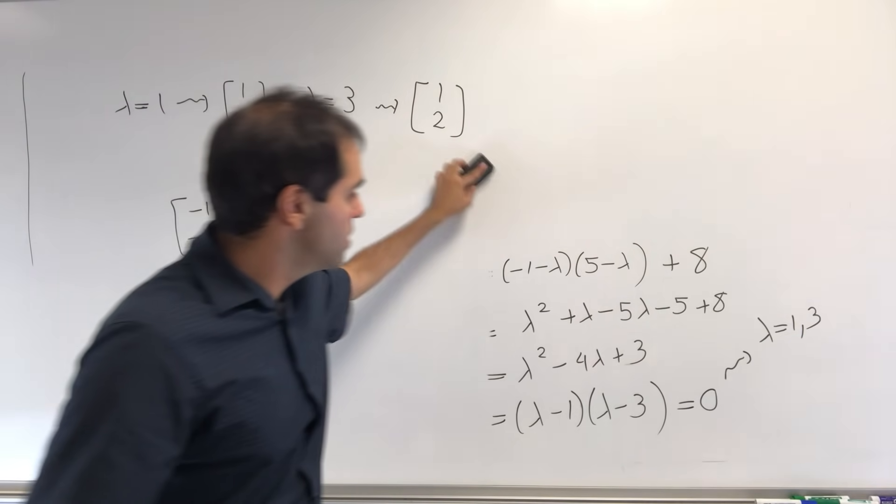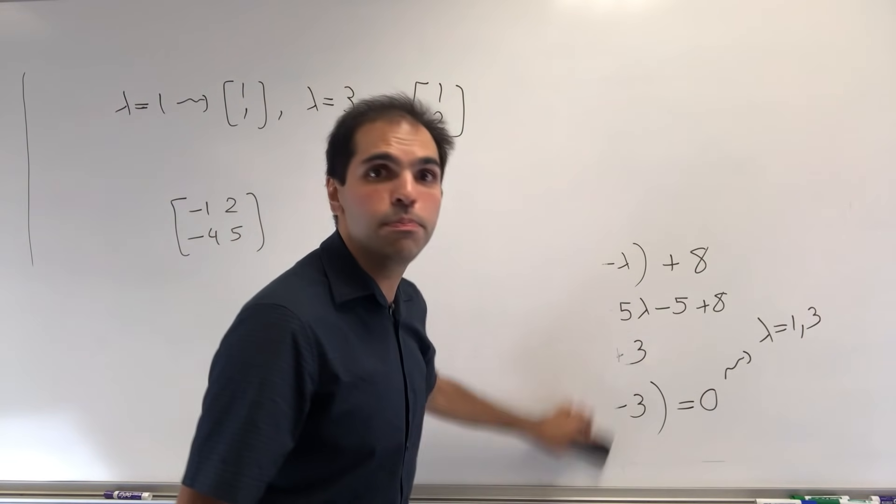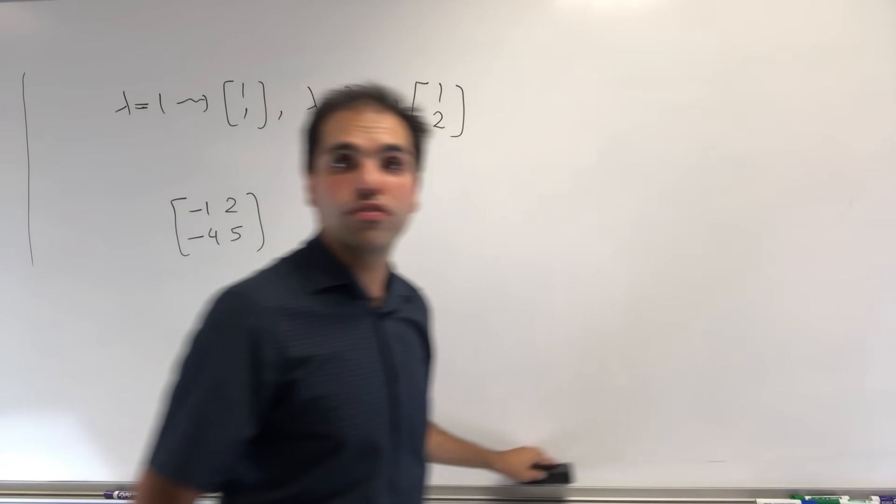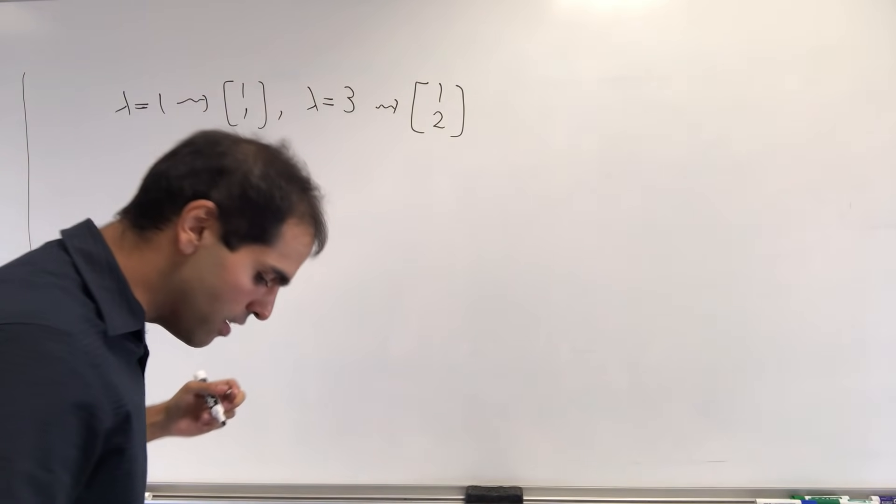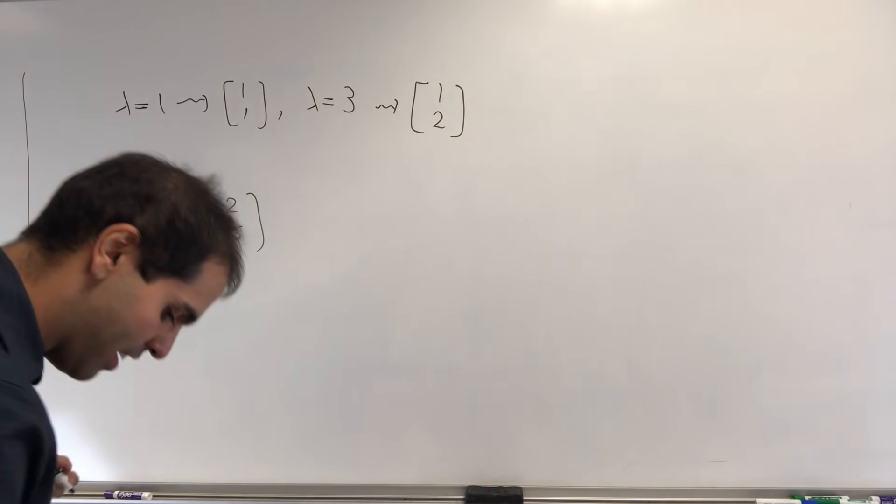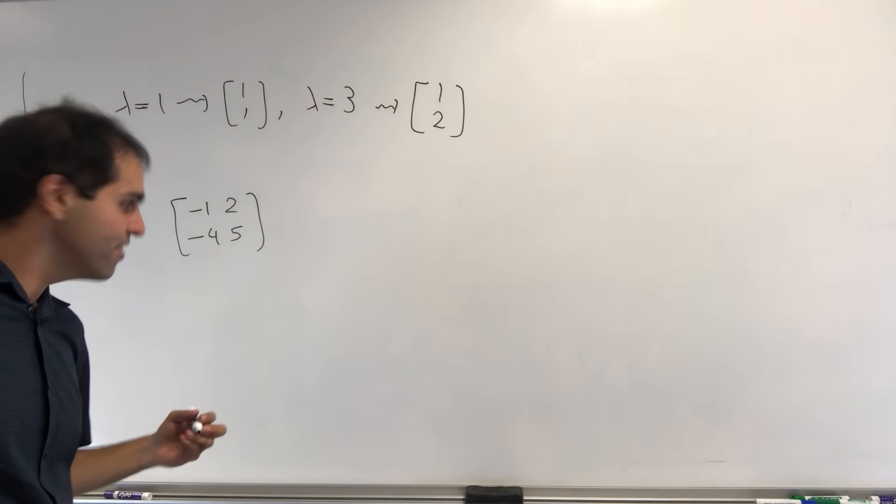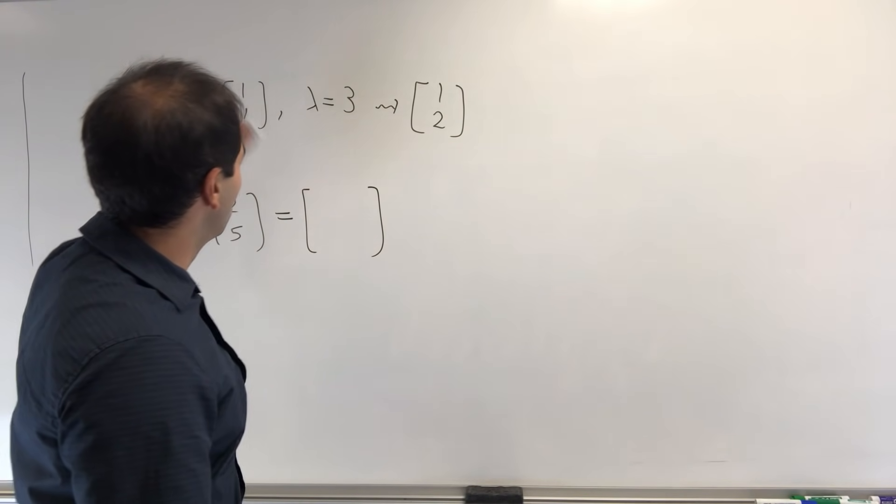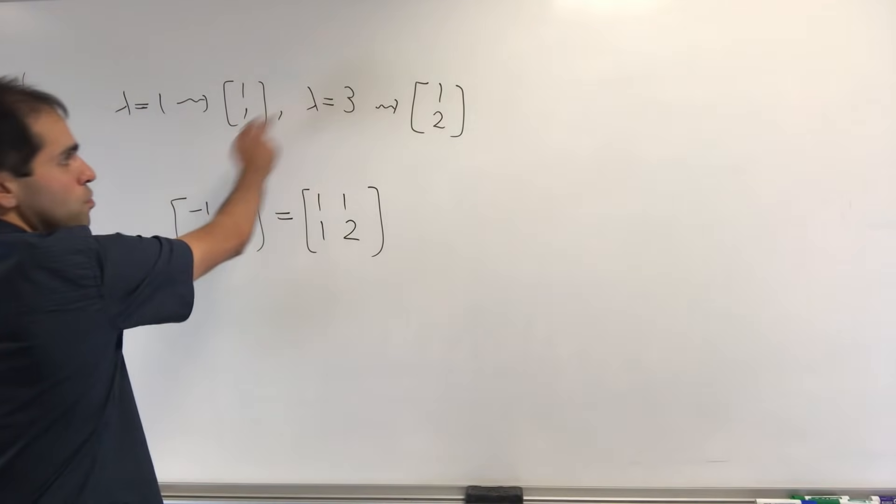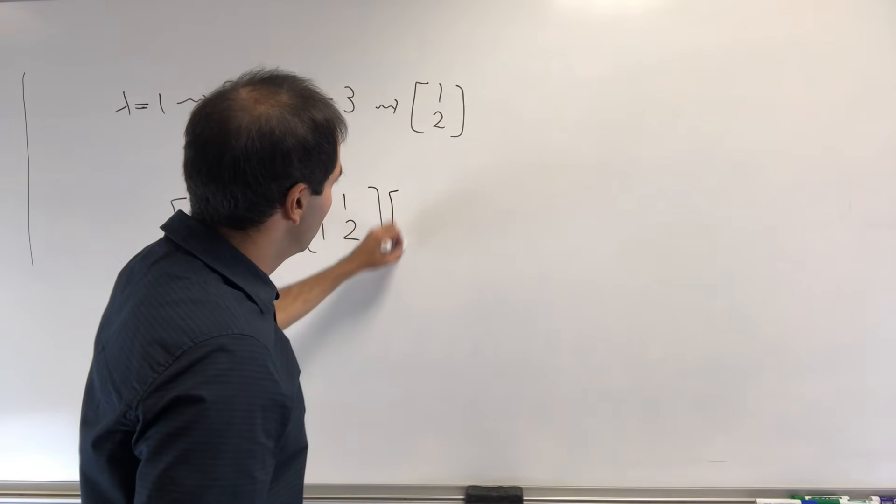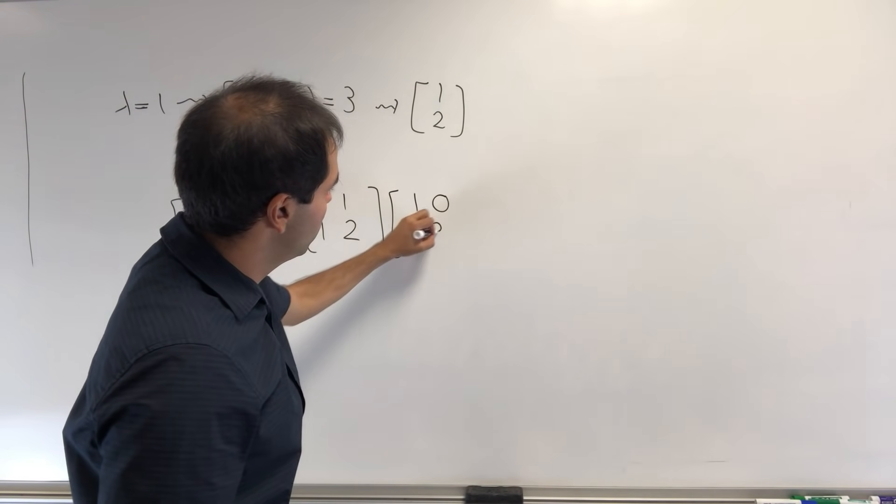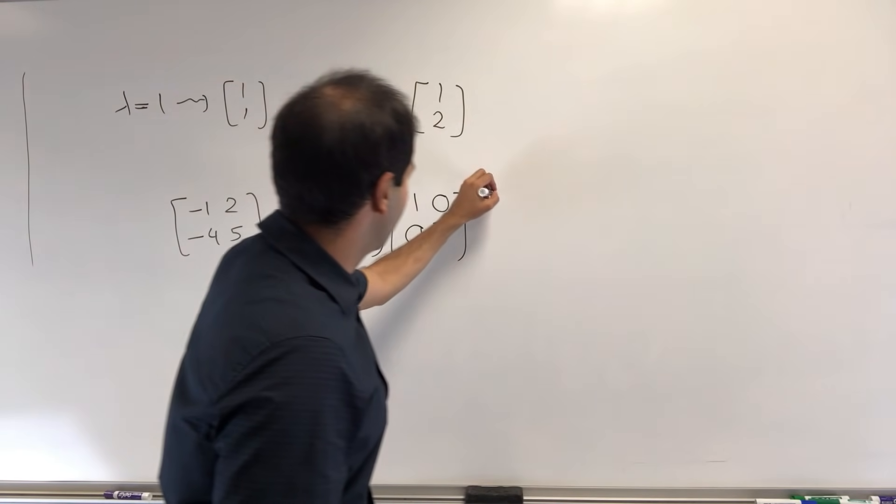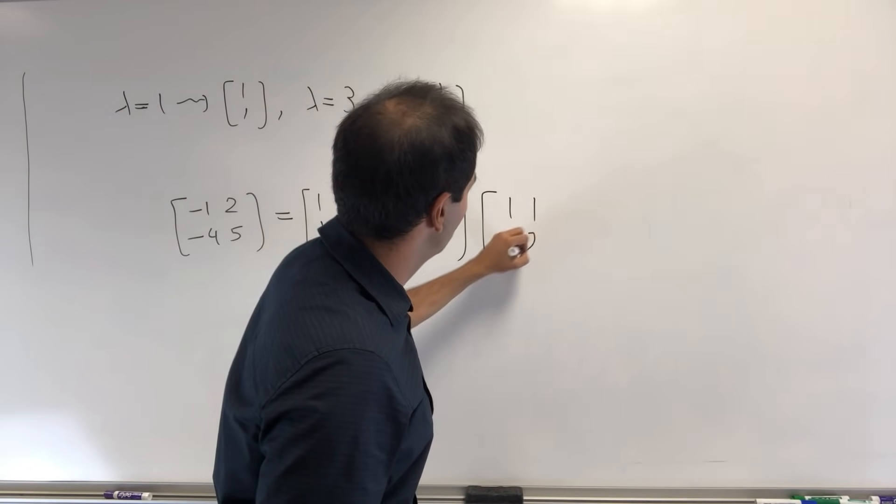All this means it's of the form PDP^(-1), where D is the matrix of your eigenvalues, and P is the matrix of corresponding eigenvectors. And so what this means, that's equal to [1, 1; 1, 2], the matrix of eigenvectors, times [1, 0; 0, 3], matrix of corresponding eigenvalues, times [1, 1; 1, 2]^(-1).